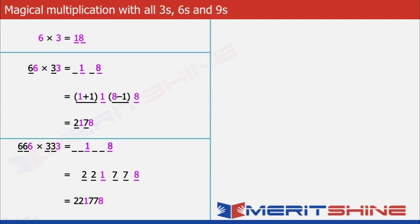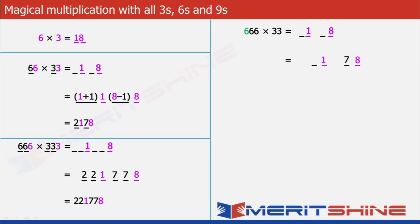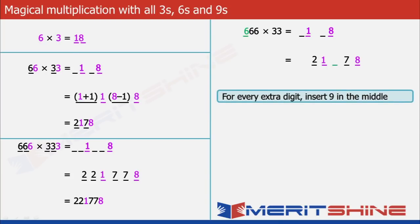Let us take some examples where our multiplicand and multiplier are different and also the number of digits in them are different. Let us begin by 666 × 33 as an example. Here we will proceed by thinking of it as 66 × 33. So we will put down 18 and add 1 blank each to the left of 8 and 1. We can fill them by first decreasing 8 by 1 and putting it to the left, and increasing 1 by 1 and putting it to the left. Now for the extra 6, we will insert 19 in the middle.